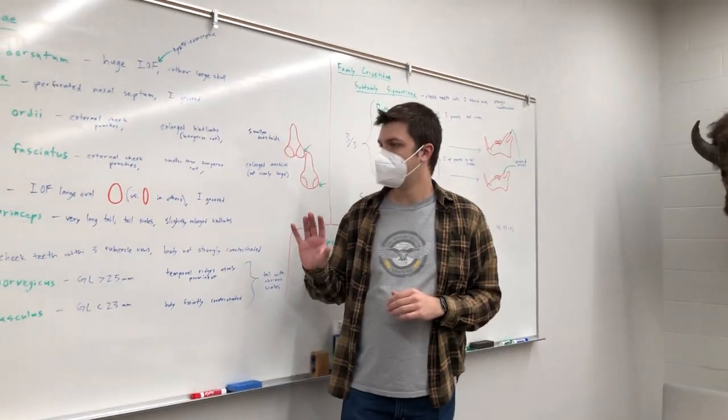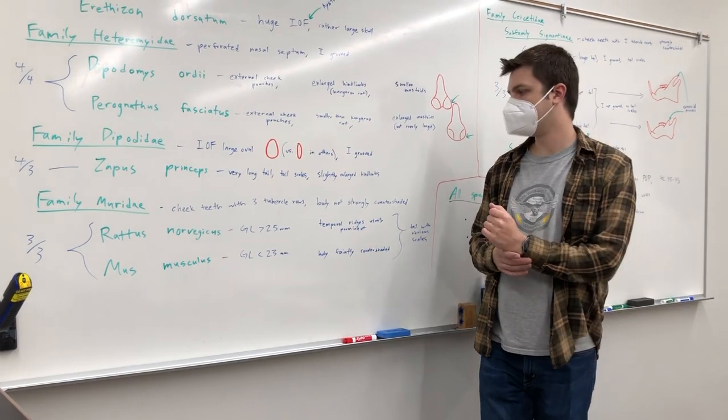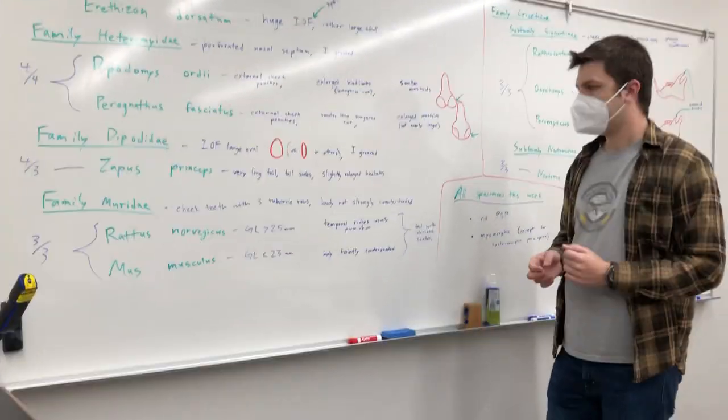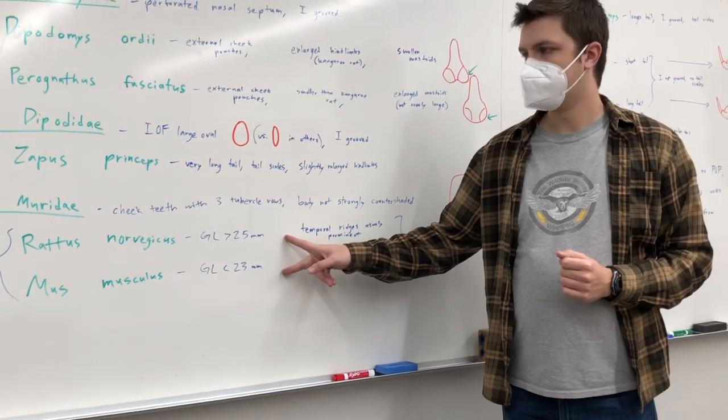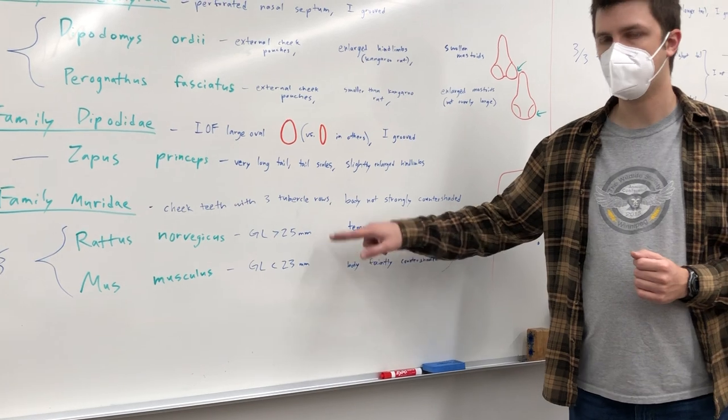So then, let's say we figured out that it is family Muridae because it has three rows of bumps. Our two species that we're looking at are Rattus norvegicus and Mus musculus, rat and mouse.